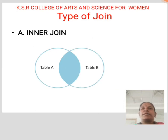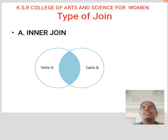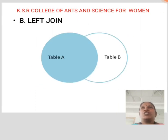Types of Joins. First: Inner Join. The INNER JOIN keyword selects all rows from both tables as long as the condition is satisfied. This keyword creates the result set by combining all rows from both tables where the condition satisfies, that is, the value of the common field will be the same.